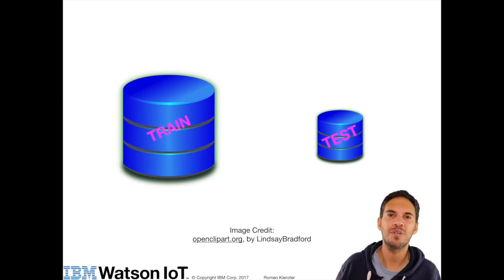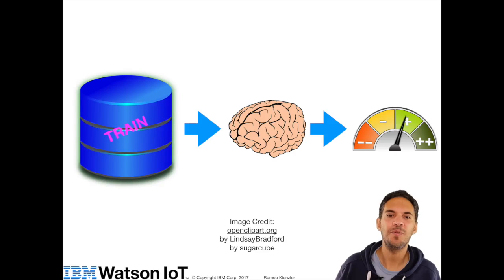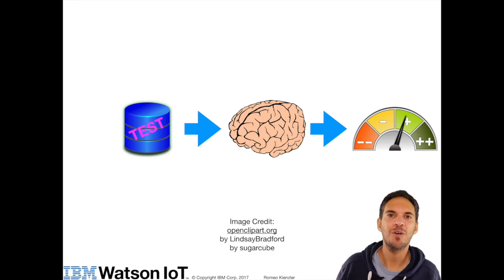You can divide your dataset into a training and a test dataset. Using the training dataset, you train your neural network, and after training, you assess the performance. Once this is a good value, you use the test dataset and also assess the performance. If the performance is equally good, then you are fine. If the performance drops, you most likely have an overfitting problem.